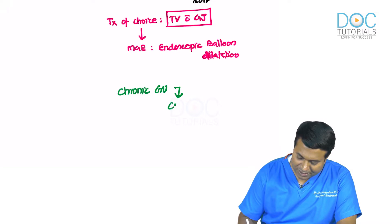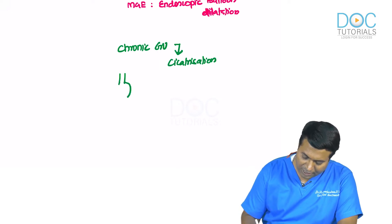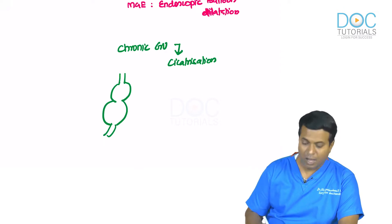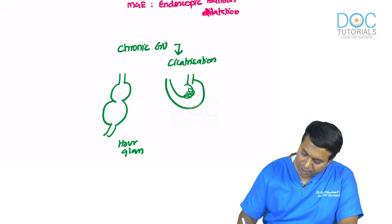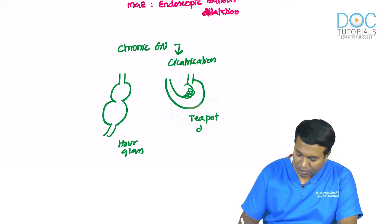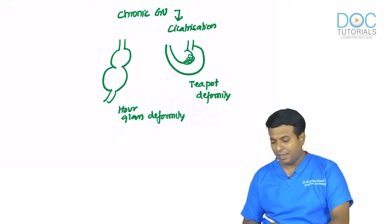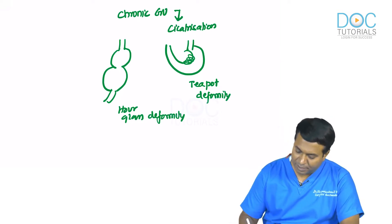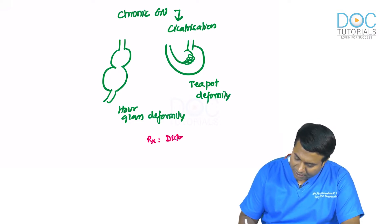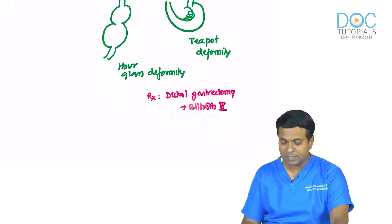Chronic gastric ulcer causing cicatrization and GOO is extremely rare today — only an MCQ topic. Long-standing gastric ulcers can produce hourglass deformity or teapot deformity. Treatment when seen: distal gastrectomy with Billroth II reconstruction.